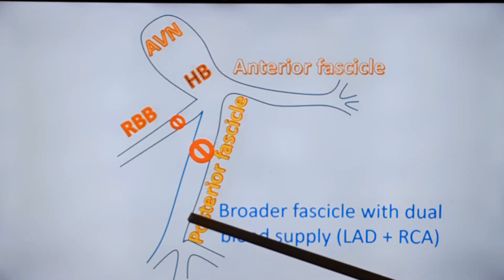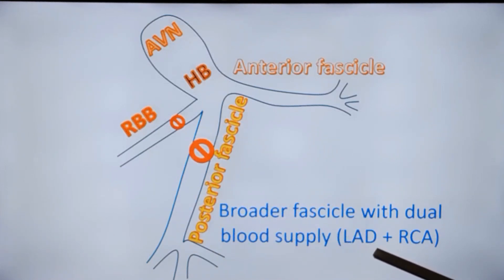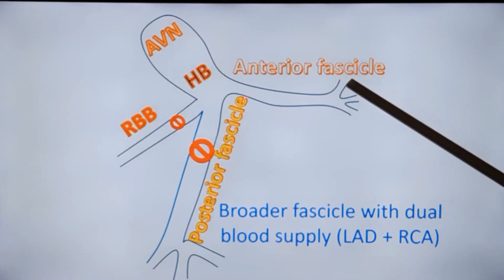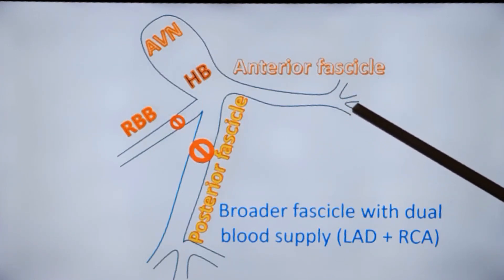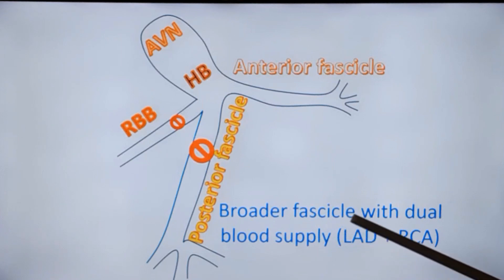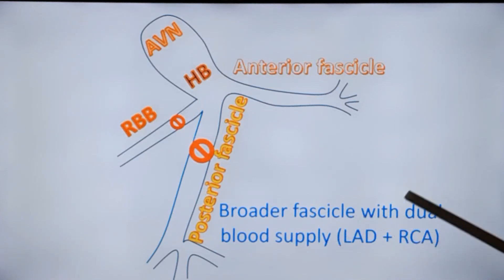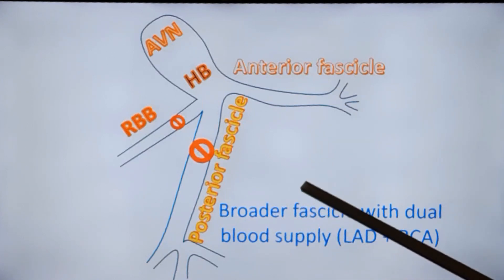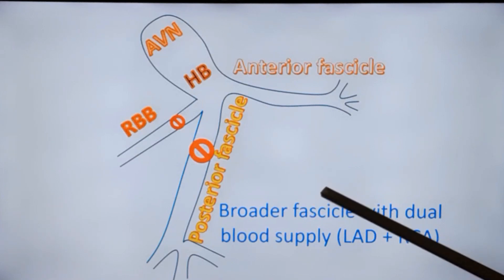The broader posterior fascicle also has a dual blood supply — left anterior descending coronary artery and right coronary artery — while the anterior fascicle has only a single blood supply from the left anterior descending coronary artery. So when the left posterior fascicle is involved, it means that both these blood supplies are lost. A dual coronary lesion is most likely when the block is due to myocardial infarction. If it is conduction tissue disease, it is different.